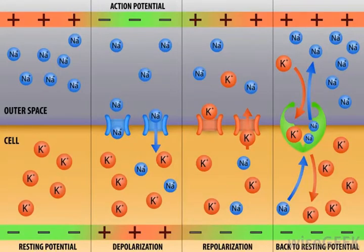Both graded potential and action potential result from a depolarization in the resting potential of a plasma membrane. The strength of this depolarization marks the differences between graded potential and action potential.